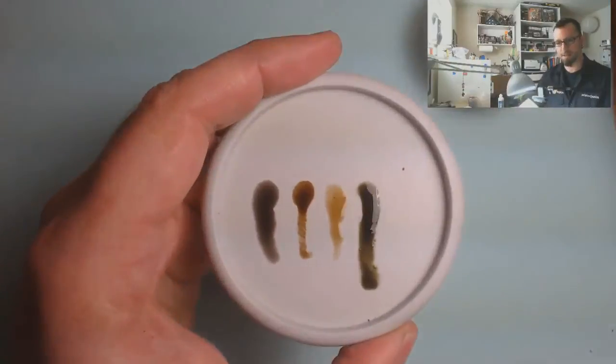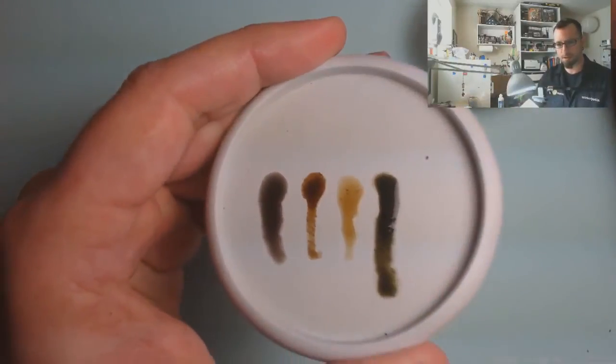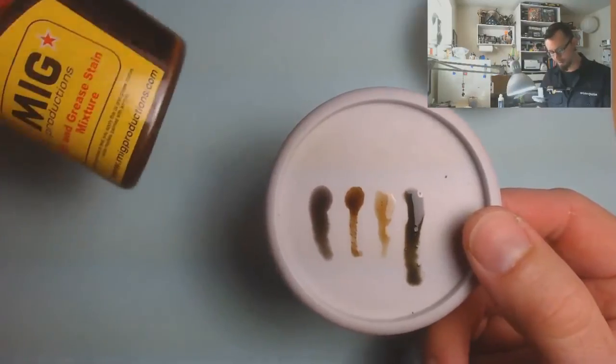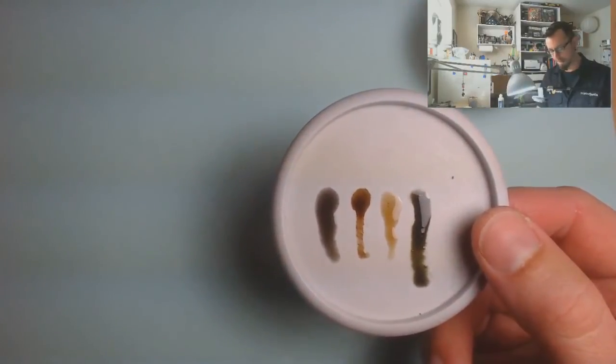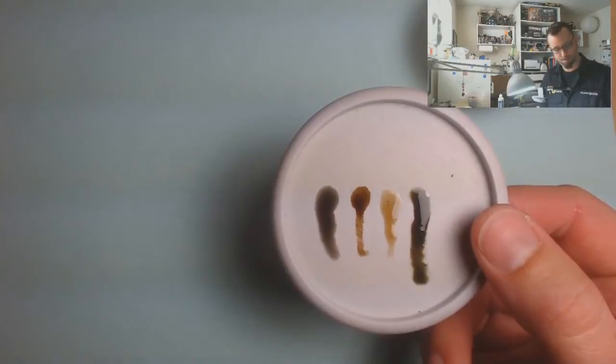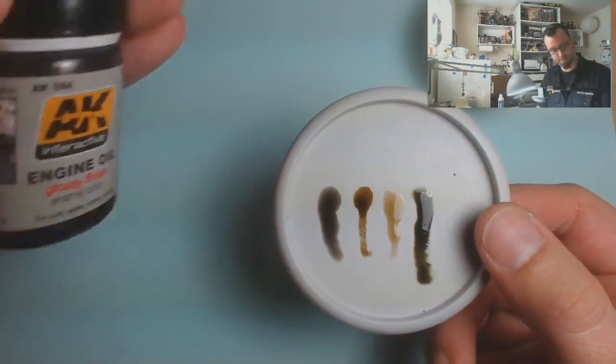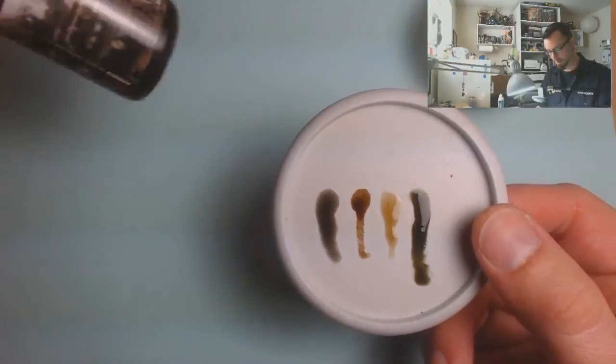What I actually have in a row are four different enamels. We start on the far left with the MIG Productions enamel oil stains. The next one is the AK Interactive enamel oil stains. The third one over here, the lightest of those three enamels, is the Ammo of MIG oil.